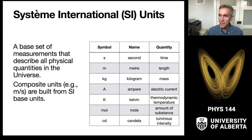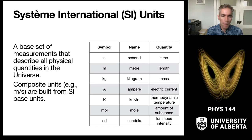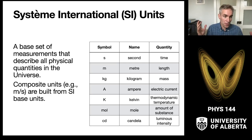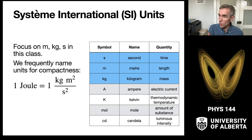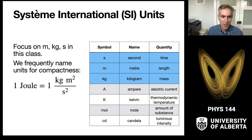This is a base set of measurements that we can use in physics and indeed through all of science that describes literally all the physical quantities in the universe. We build up composite units from these base SI units — for example, velocity is measured in meters per second. On this table, the SI units are all listed; we care about the ones in blue: the meter, the kilogram, and the second. As we move on through the rest of physics, you'll care more about the ampere, the kelvin, or possibly even the candela.